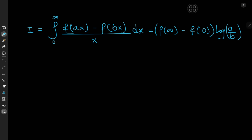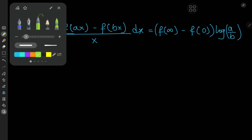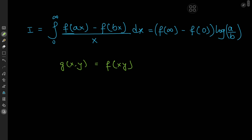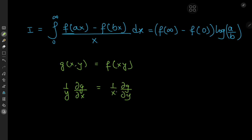Before we begin the proof, we need a bit of a tool. Let me introduce a fact: if you have a function g of two variables x and y, and that function g can be written as a function f of the product of the two variables x times y — so g(x,y) = f(xy) — then the partial derivative of g with respect to x times the reciprocal of y equals the partial derivative of g with respect to y times the reciprocal of x.